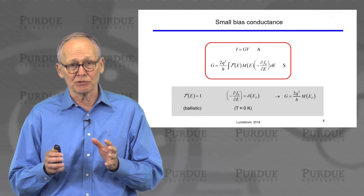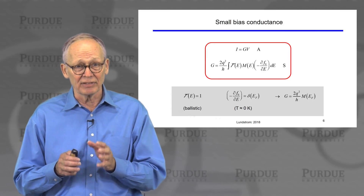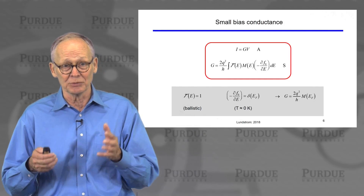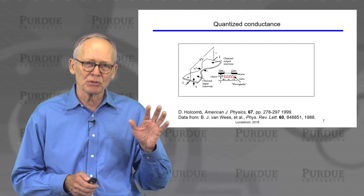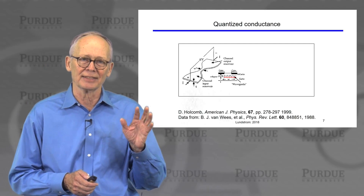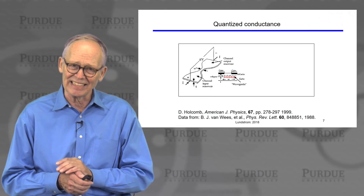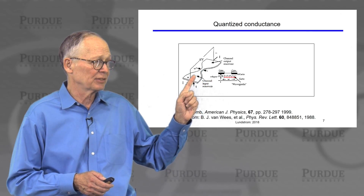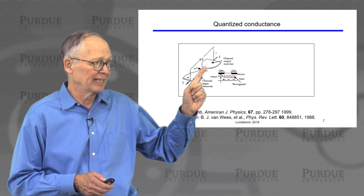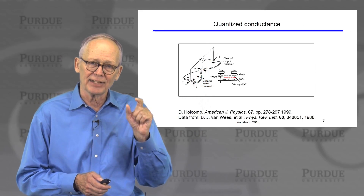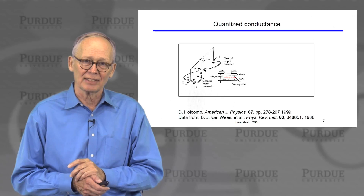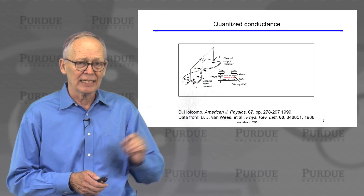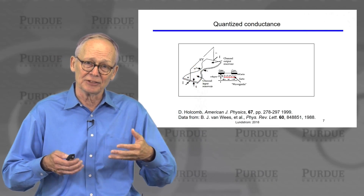In a large structure there will be many channels; in a very small nanostructure you can count them individually — one, two, three. This led to beautiful experiments in the late 80s and early 90s. Here is an example: a two-dimensional resistor with a large contact one, a large contact two, and a very narrow short constriction that limits current. The structure uses two Schottky barriers that can be reverse biased to deplete the semiconductor and give it an electrically controlled width.